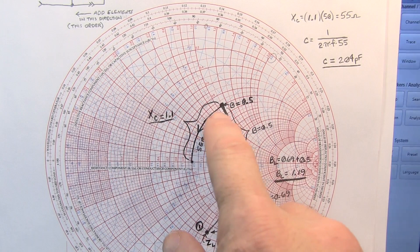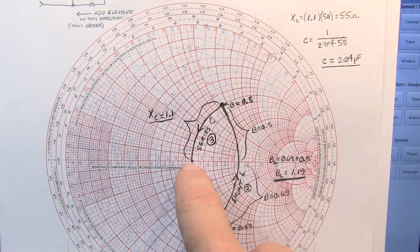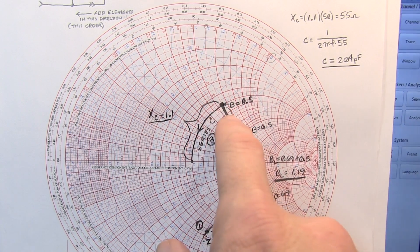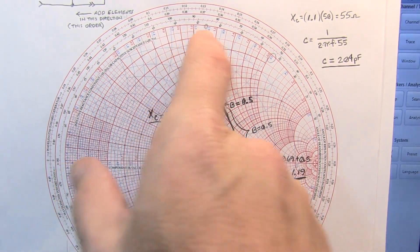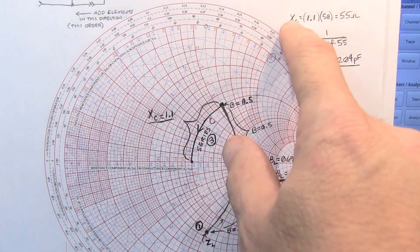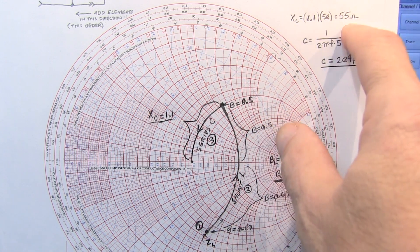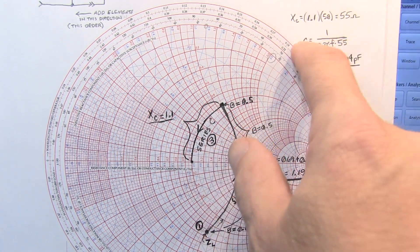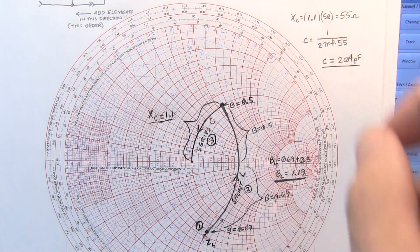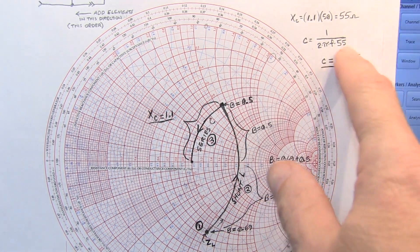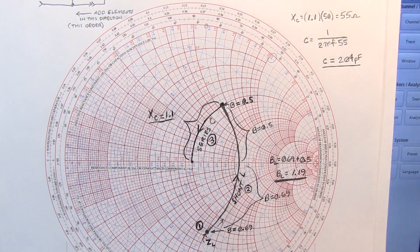So now the other piece is to add our series capacitor to bring us from this point down to our matching network. And if we take a look at our reactance component, our reactance component here is sitting right about 1.1. So we can un-normalize that. So 1.1 times 50 gives us a 55 ohm capacitive reactance and then we can use that to compute the actual capacitance value at our operating frequency of 14.2 megahertz. And it gives us a capacitance of about 200 picofarad, just a little bit more.